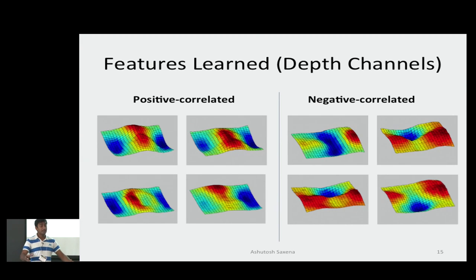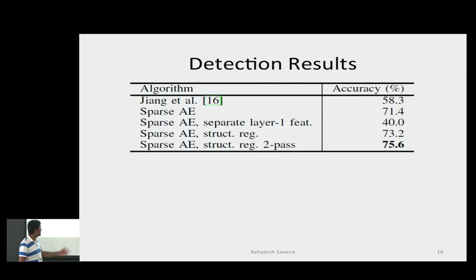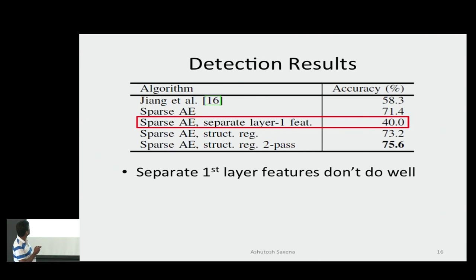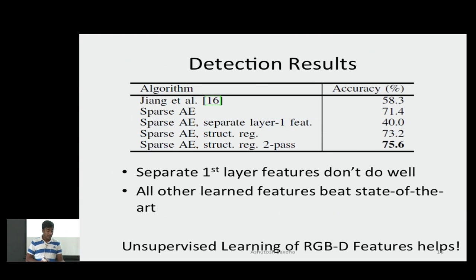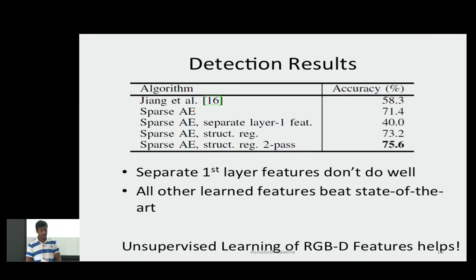By converting the grasping problem into something equivalent to object detection in the image domain, we were able to use the data and significantly increase grasping performance. The best hand-designed features my student Yunjiang could come up with in the 2011 paper achieved 58.3%. When we used deep learning, it improved significantly to 75% performance on grasping. This dataset still has a lot of scope for improvement. This was an RSS paper last year — details are in that paper.